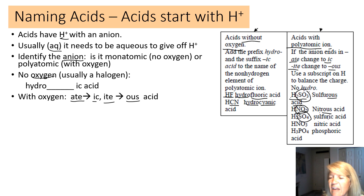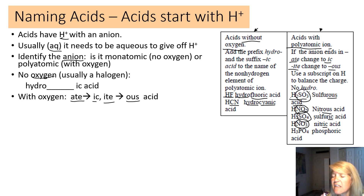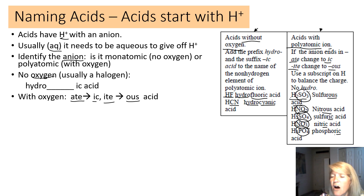For HNO3: NO3⁻ is nitrate, ends in -ate, so it becomes nitric acid. For H3PO4: PO4³⁻ is phosphate, ends in -ate, so it becomes phosphoric acid. Notice that the number of hydrogens must be balanced against the anion charge.